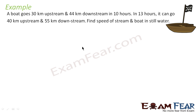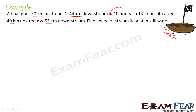Now let us try solving some complex questions. A boat goes 30 km upstream and 44 km downstream in 10 hours. In 13 hours, it can go 40 km upstream and 55 km downstream. We need to find the speed of the boat in still water and the speed of the stream. The river has its own velocity vr, and the boat has velocity vb. When going downstream — the boat moving with the river — this is called downstream.